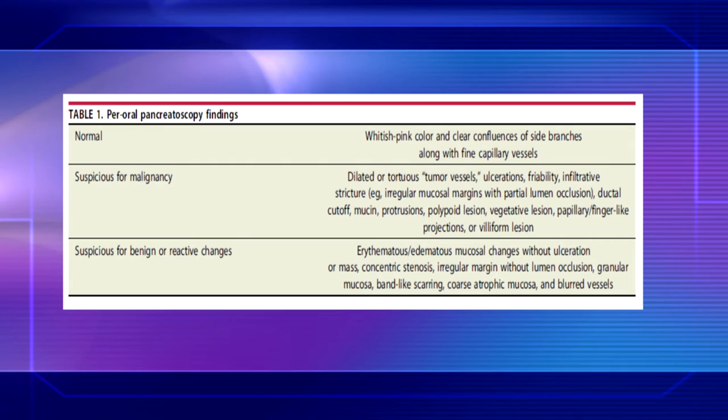Pancreatoscopy findings suspicious for malignancy included: dilated or tortuous tumor vessels, ulceration, friability, infiltrative stricture, ductal cutoff, mucin, protrusions, vegetative lesion, papillary or finger-like projections, or viliform lesion. Pancreatoscopy findings suspicious for benign or reactive changes included: edematous mucosal changes without ulceration or a mass, band-like scarring, coarse atrophic mucosa, and blurred vessels.